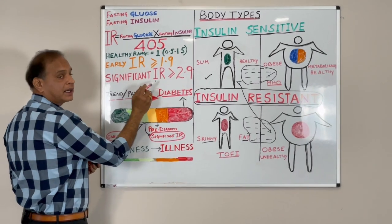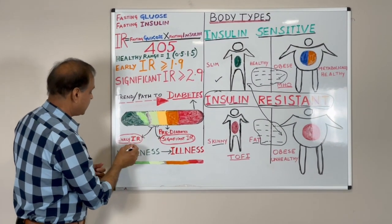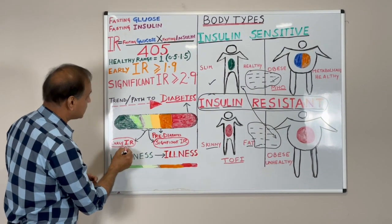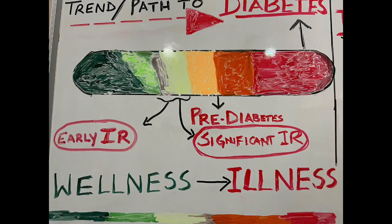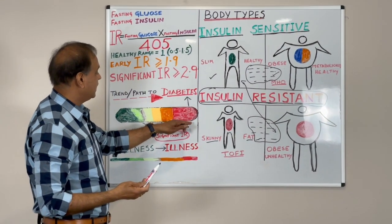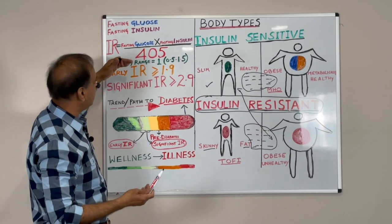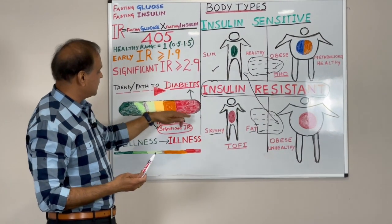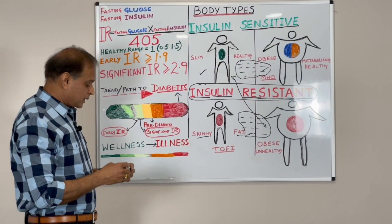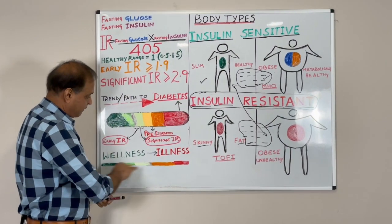To know if you are insulin resistant, you take fasting glucose and fasting insulin, multiply them together, and divide by 405. If you are in the healthy range, the optimal value is about 1, between 0.5 and 1.5. Early insulin resistance is indicated by a value greater than or equal to 1.9, and significant insulin resistance is greater than 2.9. In the grey transition zone — early insulin resistance — numbers hang around 1 to 1.9. Around 2 to 2.9 is called pre-diabetes, and once someone has diabetes, we already know they are insulin resistant.